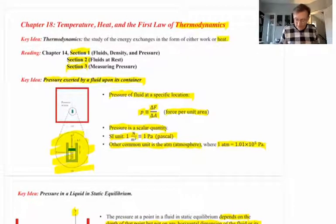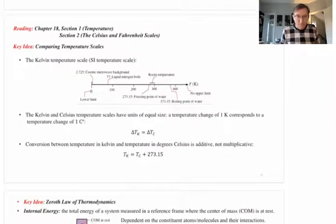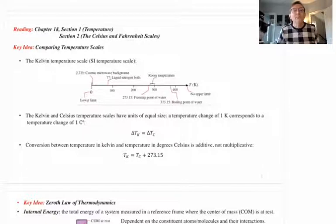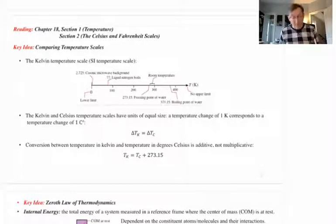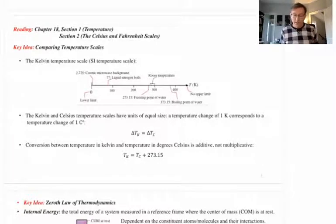If you want additional reading for this material, you can go to your Wiley Plus book, Chapter 18. Section 1 is about temperature and how to measure it. Section 2 is about two particular temperature scales, the Celsius and the Fahrenheit temperature scales. Section 1 is about the most important temperature scale in science, which is the one I'm going to talk about now.